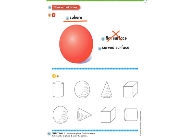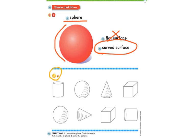If it is not flat, what word can we use to describe this sphere? It is a curved surface — we see the curve on the outside of this sphere. Down at the bottom, number two, our job is to go through each shape and circle the sphere.